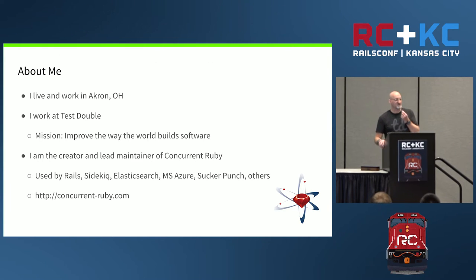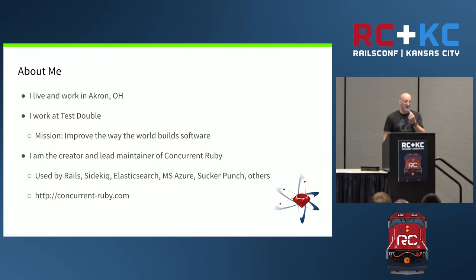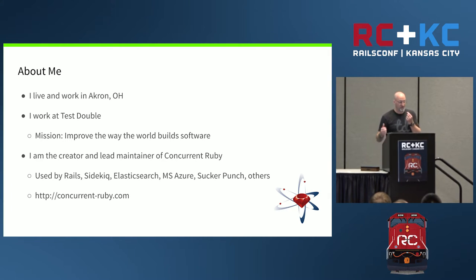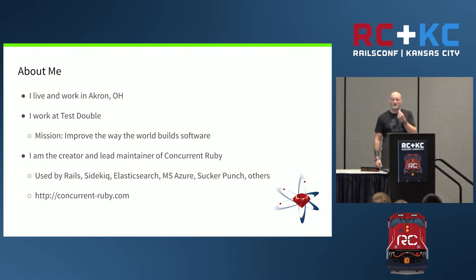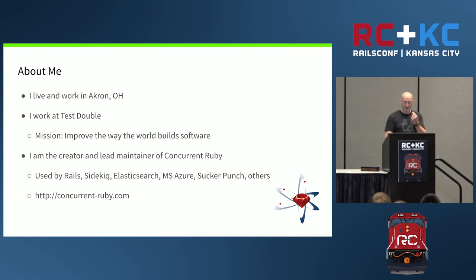My biggest claim to fame lately is I created a Ruby gem called Concurrent Ruby. You may have heard of it because it's started to be used in some very well-known projects like Rails. Concurrent Ruby is a dependency of Action Cable. In Rails 4 and Rails 5 it's used by Sprockets, also by Sidekiq, Sucker Punch, Elasticsearch, Logstash, and the Microsoft Azure Ruby tools. Much of what I'm going to talk about draws from that experience, but this is not a sales pitch — this is about Active Job and Rails itself.